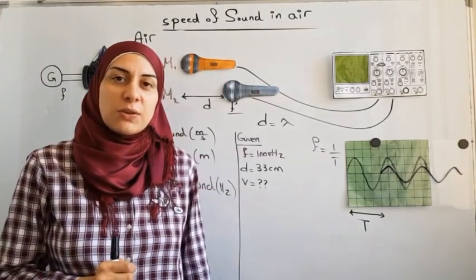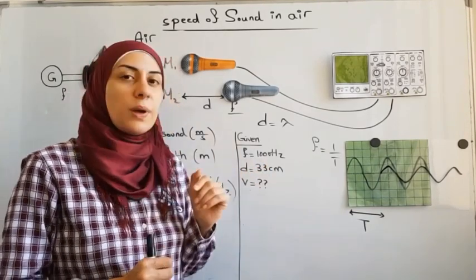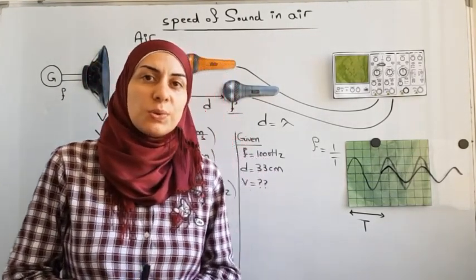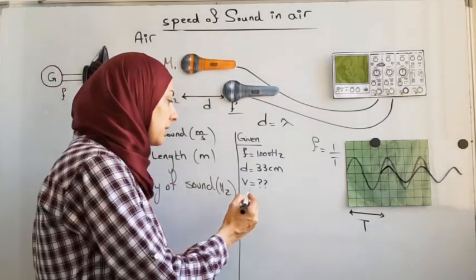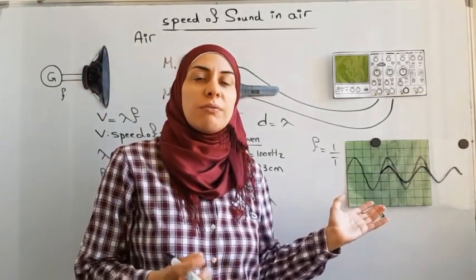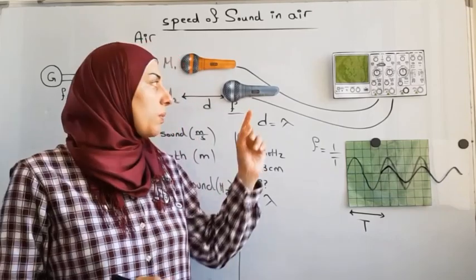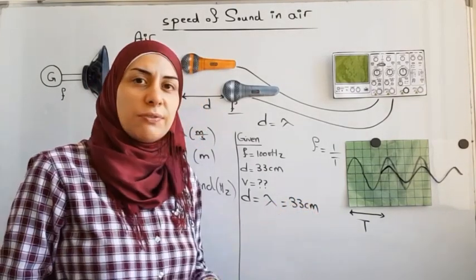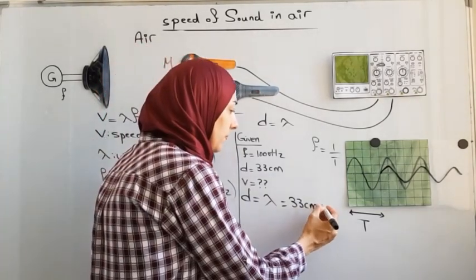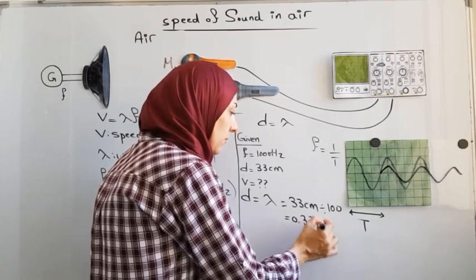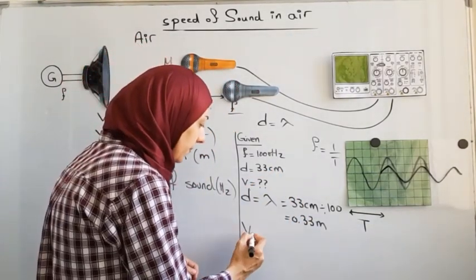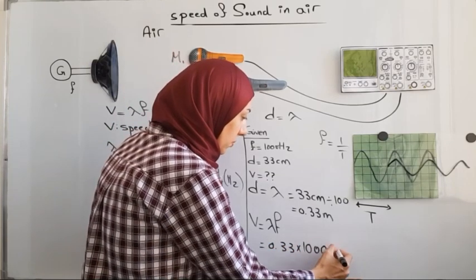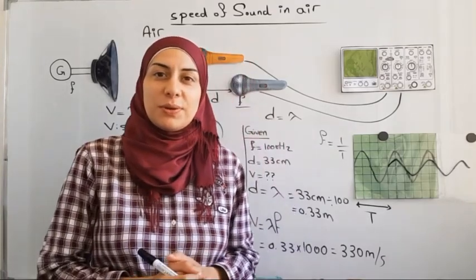Let's take some real values. If the frequency of sound is given to be 1000 hertz and the distance between the two microphones is 33 centimeters, how can we find the speed of sound in air? First, we relate distance D to the wavelength lambda. Since D equals lambda, the wavelength is 33 centimeters, which we convert to 0.33 meters. Now using the formula V equals lambda times F, inserting the values of lambda and F, we get the speed of sound in air equal to 330 meters per second.